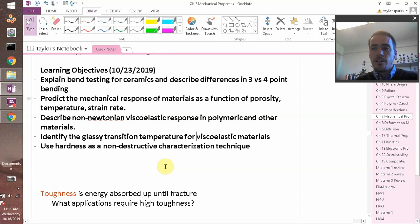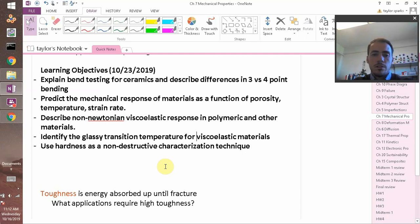Greetings one last time from Qatar and I'll be back next class. Our learning objectives for today: explain bend testing for ceramics and describe the difference between three versus four point bending. We will predict the mechanical response of materials as a function of porosity, temperature, and strain rate. We will describe non-Newtonian viscoelastic response in polymers. We'll identify the glassy transition temperature for viscoelastic materials and use hardness as a non-destructive characterization technique.